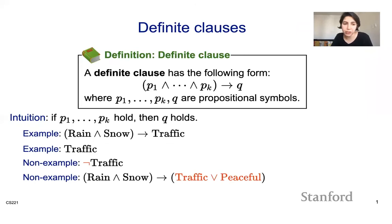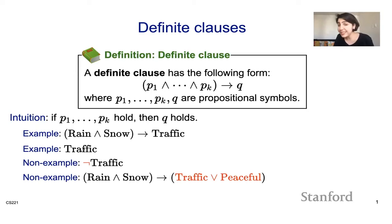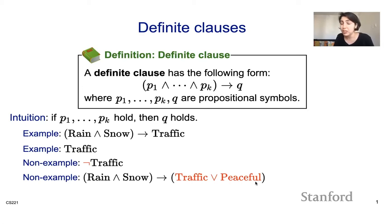Here are some examples of definite clauses. Rain and snow implying traffic is a definite clause because it has the form p1 and through pk implying q. Traffic itself is also just a definite clause — q itself is a definite clause. Negation of traffic is not a definite clause because we don't have any negations here; these are propositional symbols. And rain and snow implying traffic-or-peaceful is not a definite clause because of the disjunction. A definite clause has the form of just positive information implying something positive.